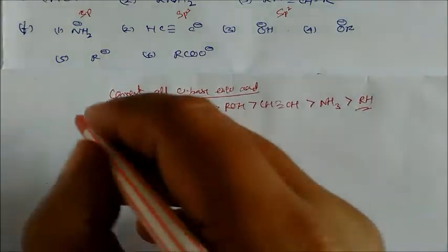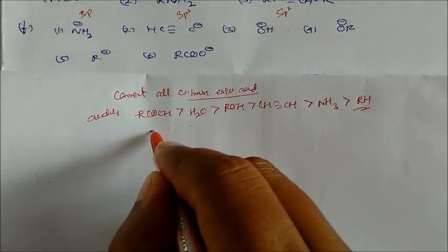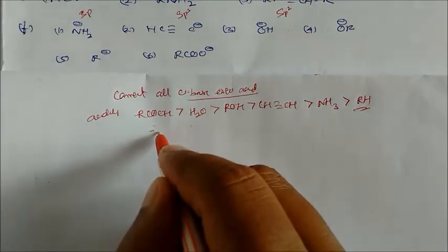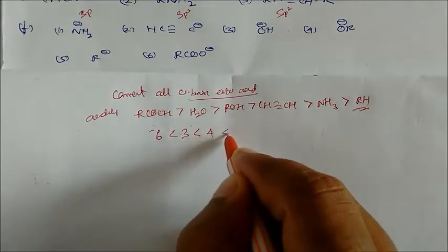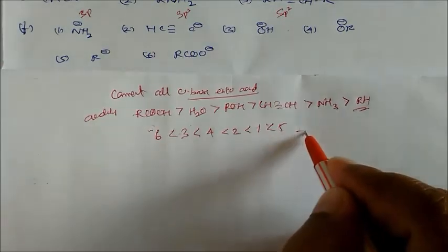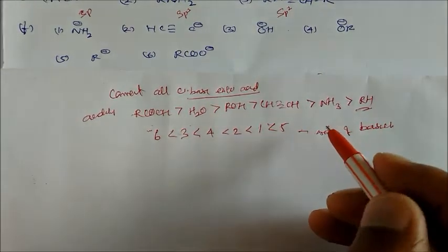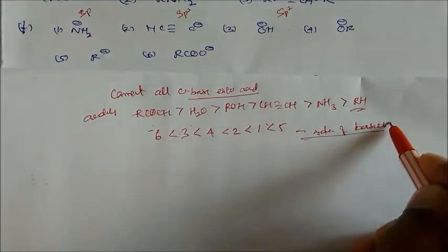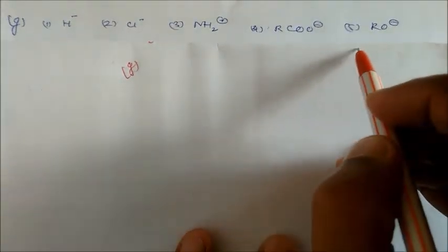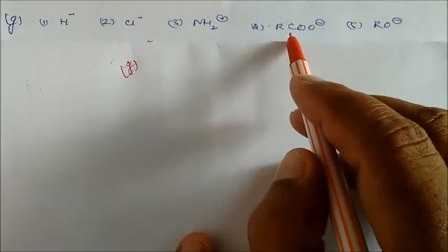The acidity order is: ROH (6) > compound 4 > compound 2 > compound 1 > compound 5. The reverse of this acidity order gives the basicity order. The conjugate bases being compared include: HCl, ammonia, a carboxylic acid, and an alcohol.